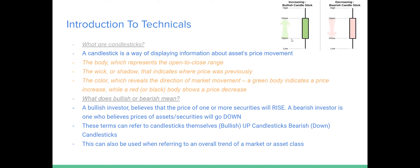There are four elements to a candlestick: the open, the low, the high, and the close. We open, price traded up, came back down, traded lower, created the low, came back, and then closed out. This is just a brief overview of candlesticks, but this is where you're going to be analyzing the market — purely off of candlesticks. Do not be using anything else besides candlesticks on your TradingView chart.